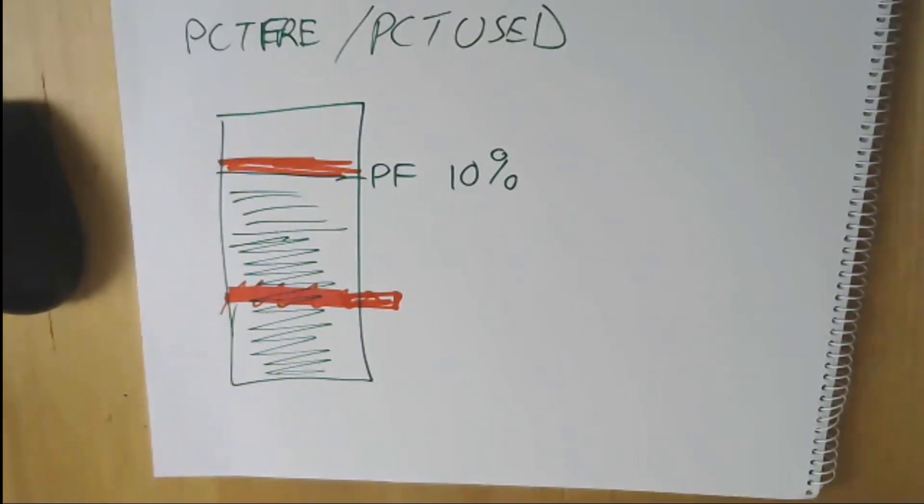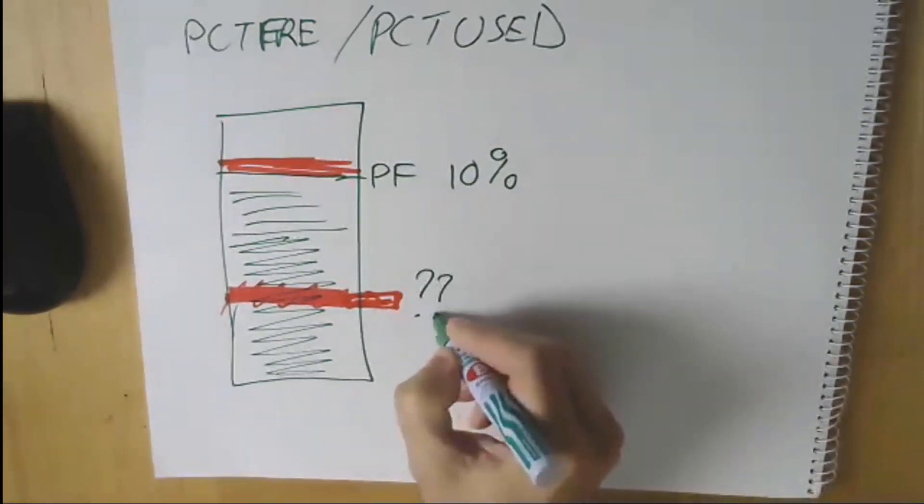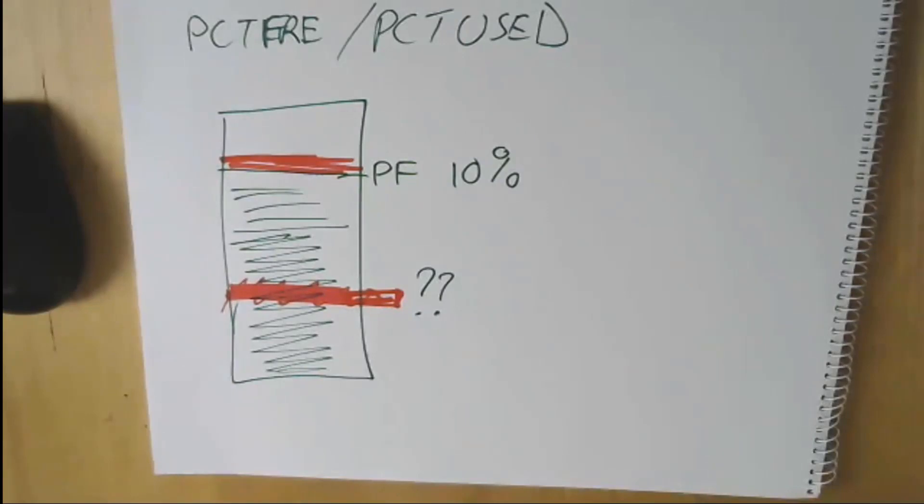The reason, even though this is a simple concept most people are familiar with, I wanted to talk about it because the default is 10%. When I help customers, I find just about every table is set to percent free 10%. But the reality is, think about how many times you actually have rows that update and get larger.